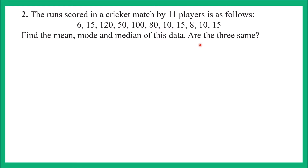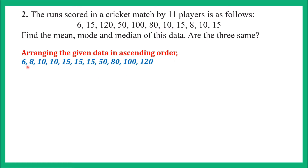I have arranged the data in ascending order. The smallest value is 6, written first; next is 8; then 10, which repeats twice, so written twice; then 15, 50, and so on. Now we need to find the mean. Mean = sum of observations divided by total number of observations, as we learned in Exercise 3.1.